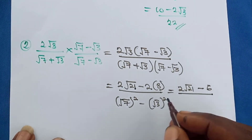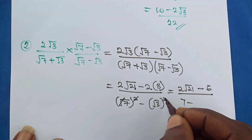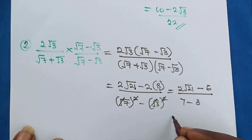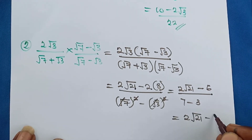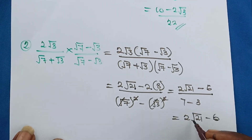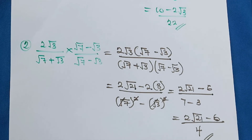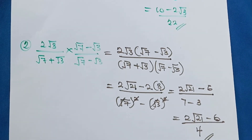So let's simplify: we have 2√21 minus 2 times 3, which gives 6, over — the squares cancel the roots — giving 7 minus 3, which is 4. So this equals (2√21 minus 6) over 4. We have changed the denominator to a rational number. That is the idea about rationalizing the denominator of a surd. See you in the next session.